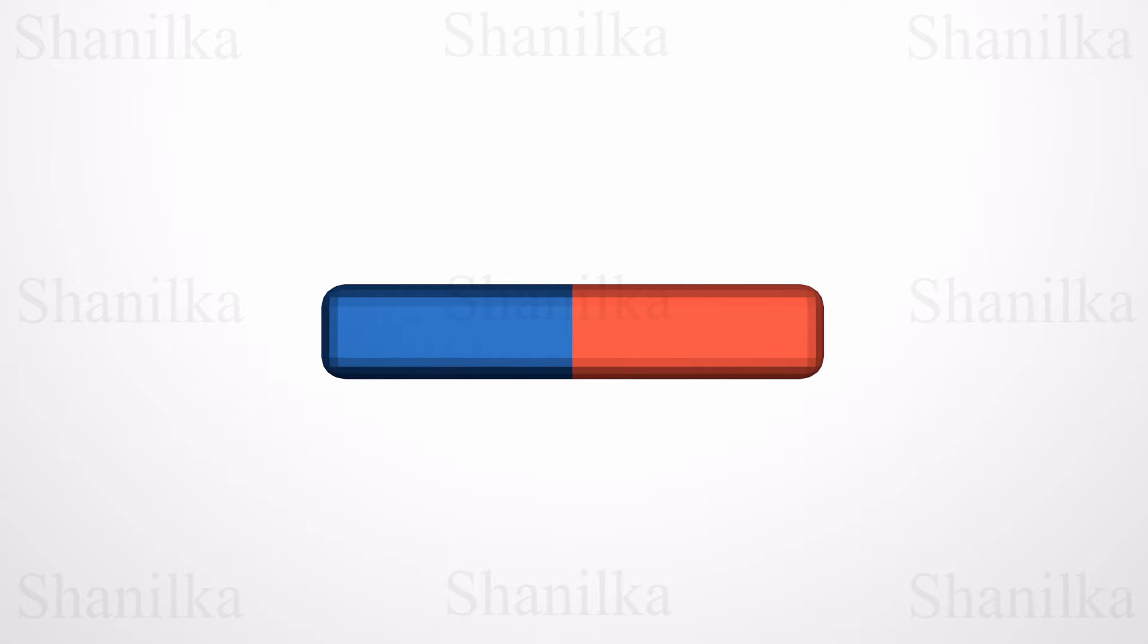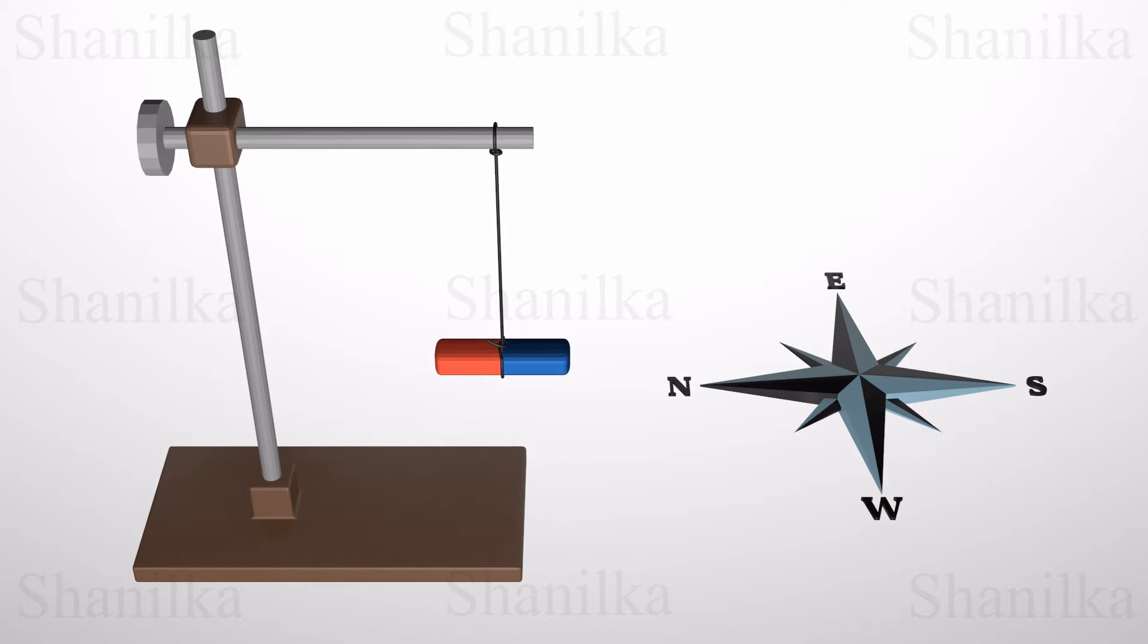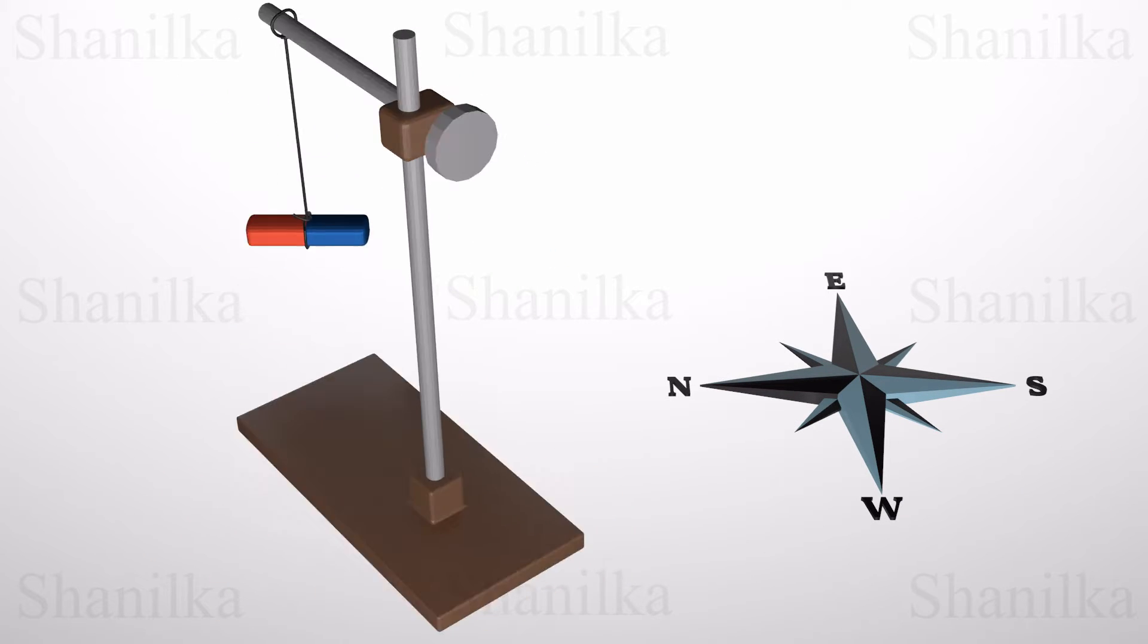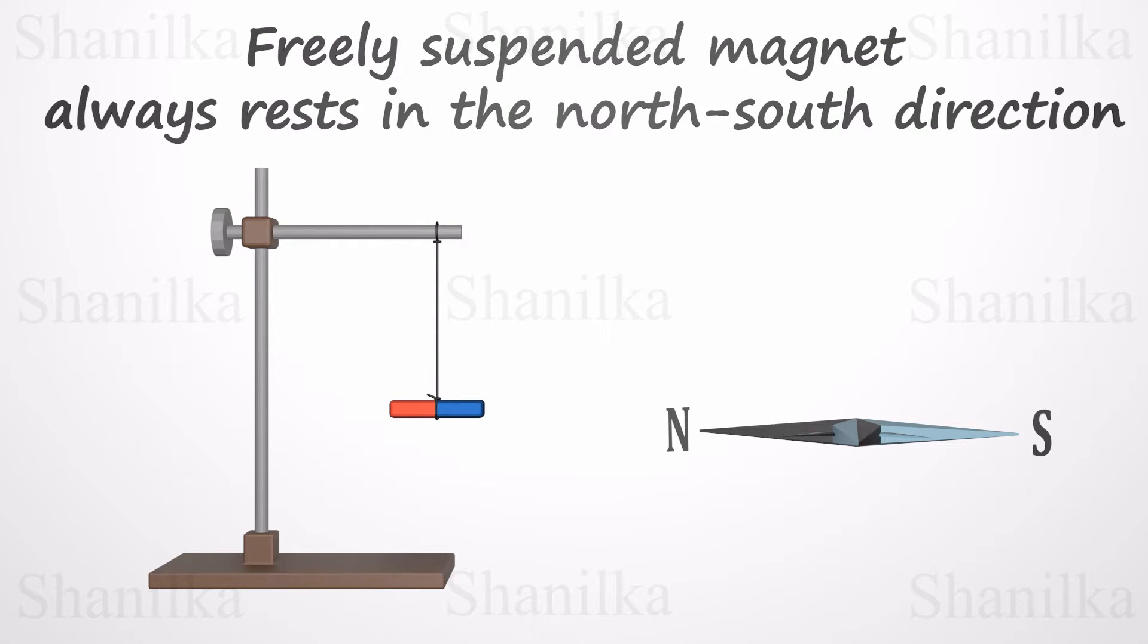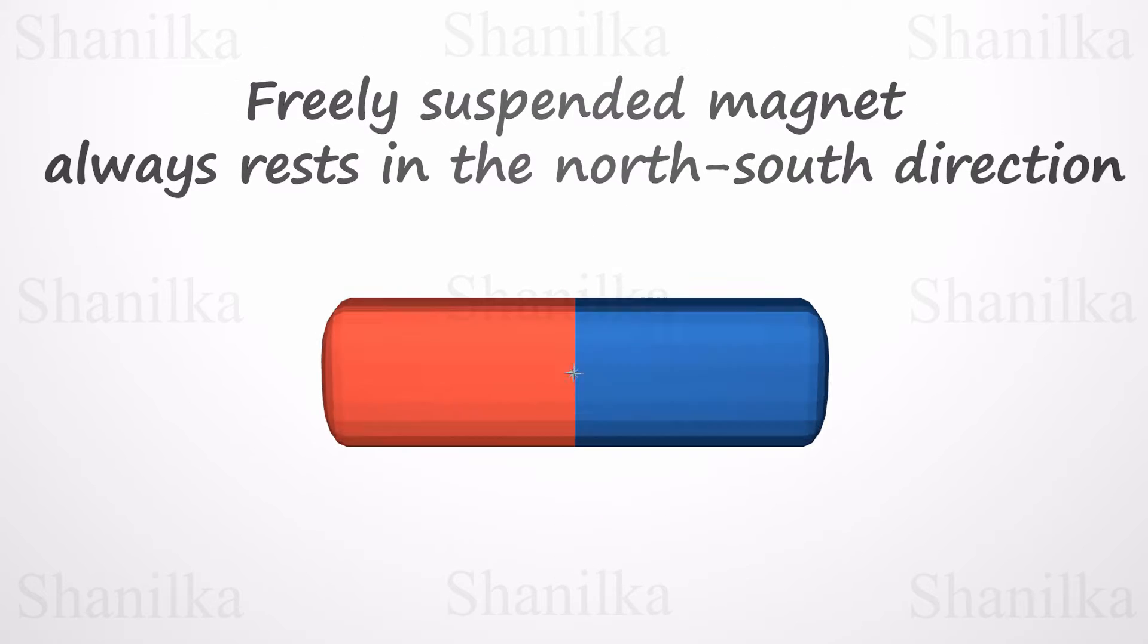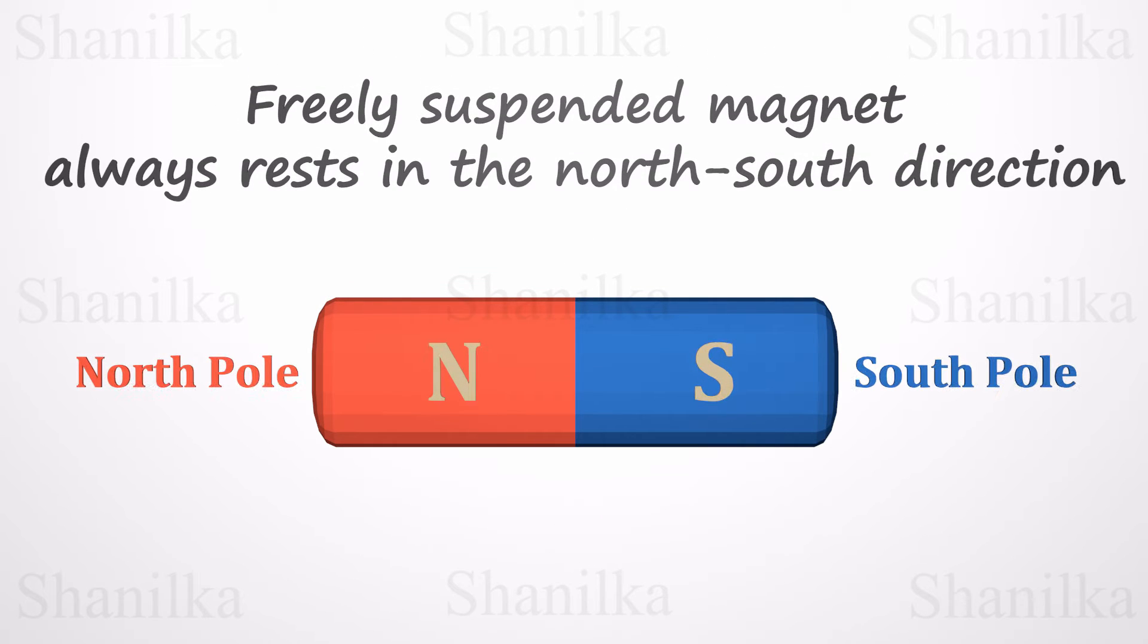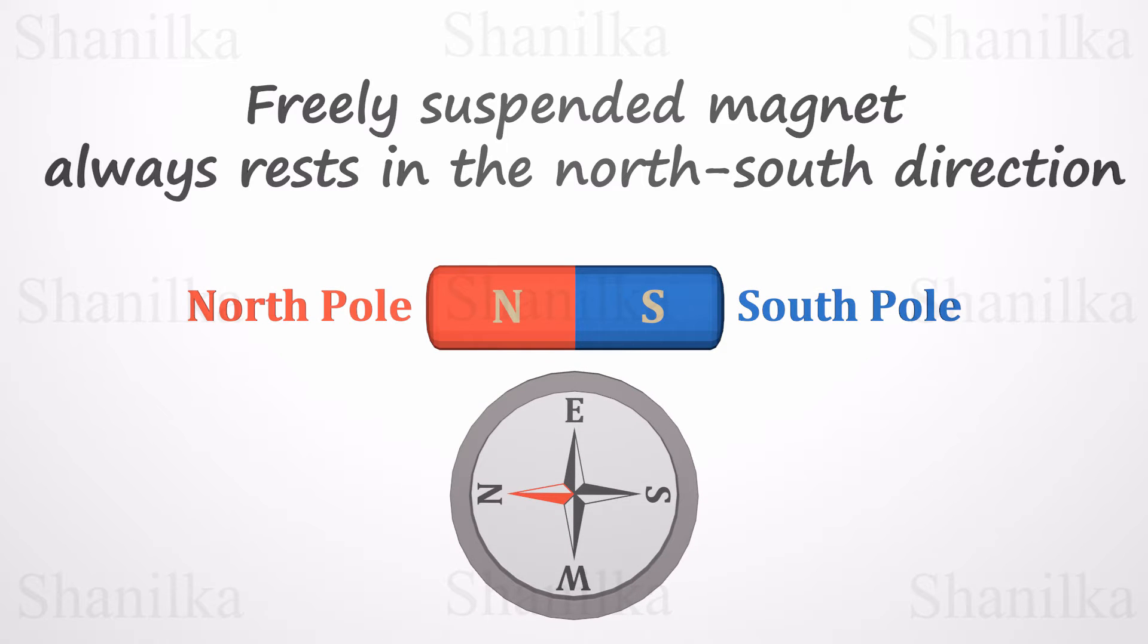When a freely suspended magnet comes to rest, it always rests in the north-south direction. The direction pointing to the geographic north of the earth is called the magnet's north pole. The direction pointing to the geographic south is called the magnet's south pole. This property is especially useful in navigation. The magnetic compass is built based on this.